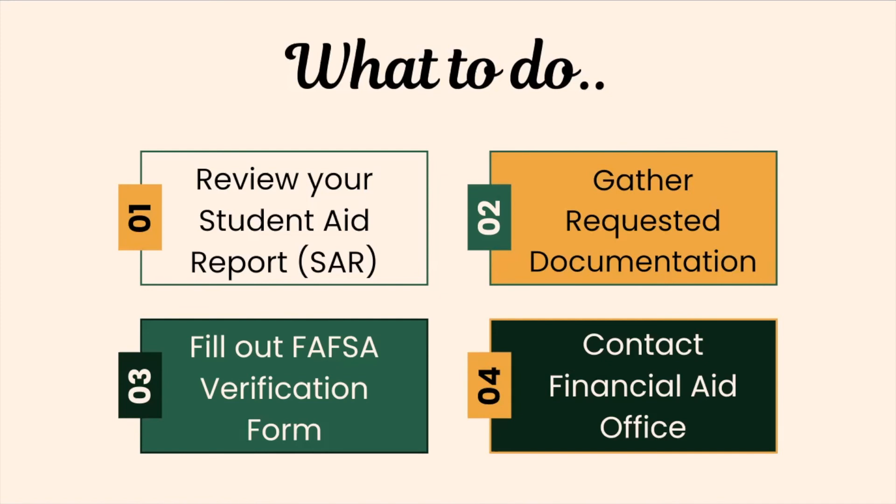Finally, contact the school financial aid office. After submitting your FAFSA verification form or updating your FAFSA, contact the school's financial aid office. If your financial aid package was adjusted based on your FAFSA verification and you need more aid, talk to the financial aid representatives about your other options such as additional student loans.